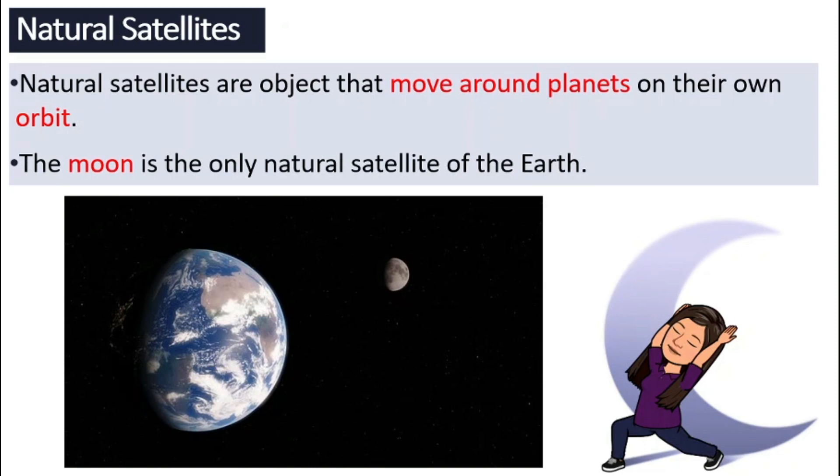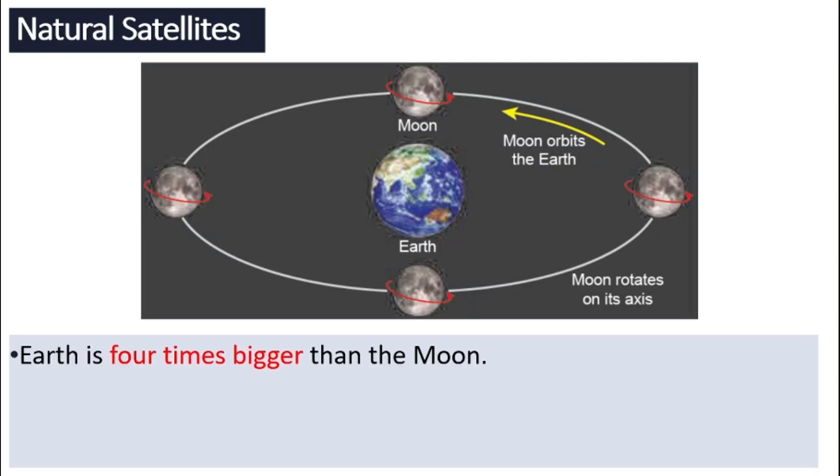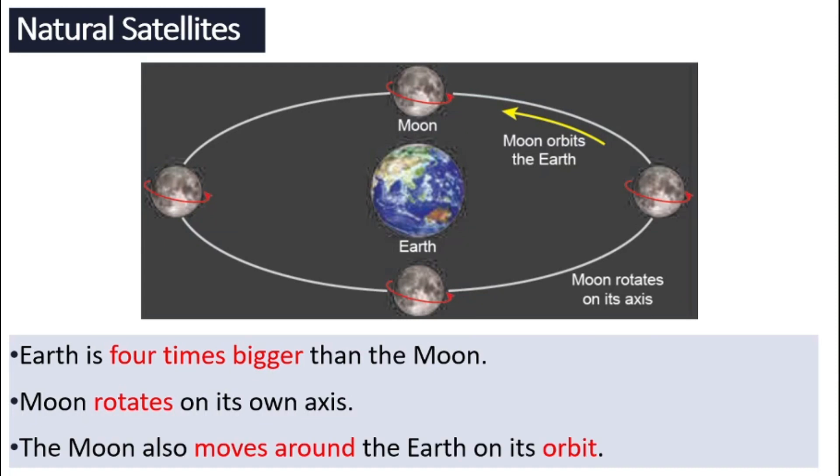We only have one natural satellite even though we have a lot of man-made ones. The Moon, just like the Earth, rotates on its own axis and it also orbits around the Earth. It has its own orbit that it moves around the Earth. And also the size of the Earth is four times bigger than the Moon. That means we need four moons to put together to achieve the size of the Earth.